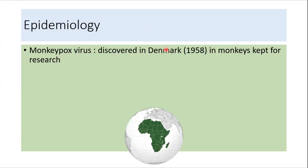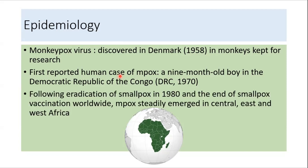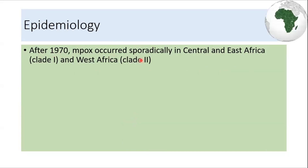The monkeypox virus was discovered in Denmark in 1958 in monkeys kept for research, and the first reported human case was a nine-month-old boy from Congo in 1970. Following the eradication of smallpox in 1980 and the end of smallpox vaccination worldwide, Mpox steadily emerged in Central, East, and West Africa, and has occurred sporadically in various parts of Africa since then.